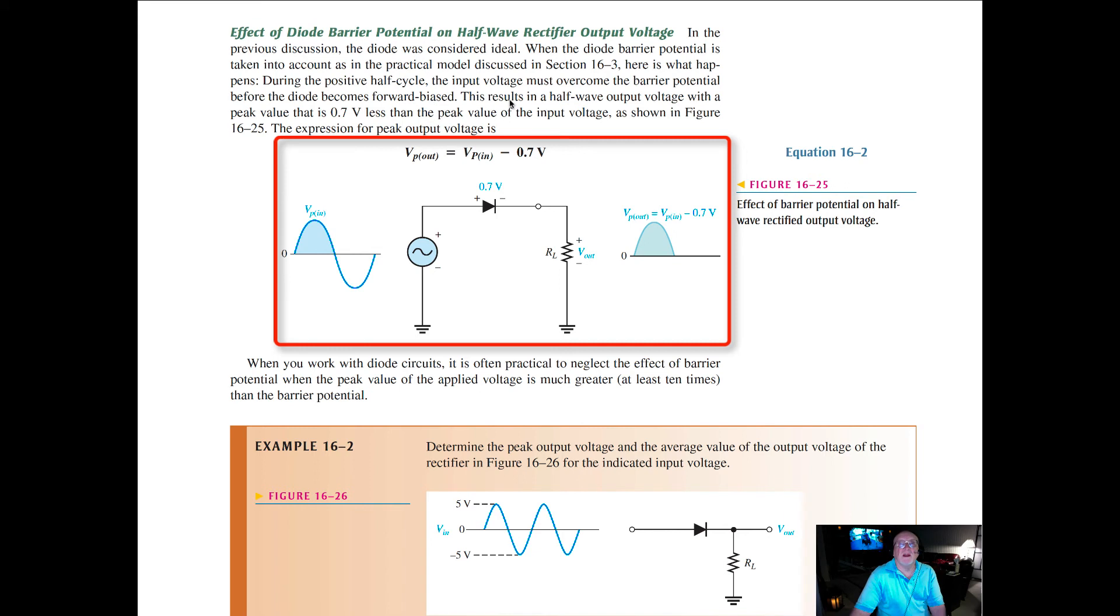This results in the diode becoming forward biased in the half wave output voltage with a peak value that of seven-tenths less than the peak value of the input voltage. We have to remove the seven-tenths from the overall peak. If this were 100 volts at the peak, we'd subtract seven-tenths from that. So your new output, although the waveform looks the same as the input, it's going to be seven-tenths of a volt less.